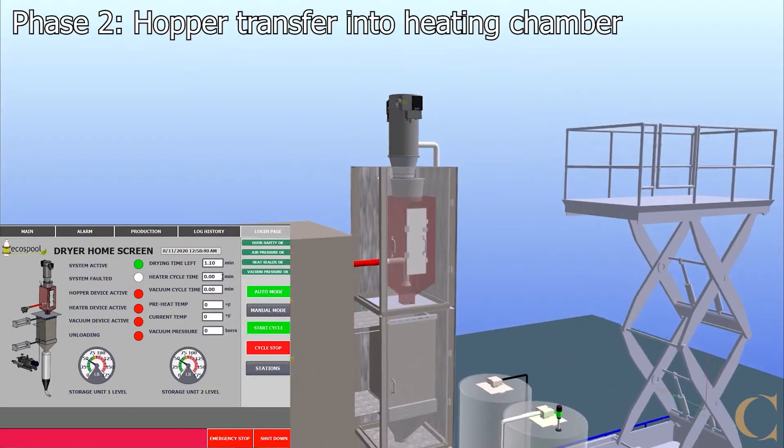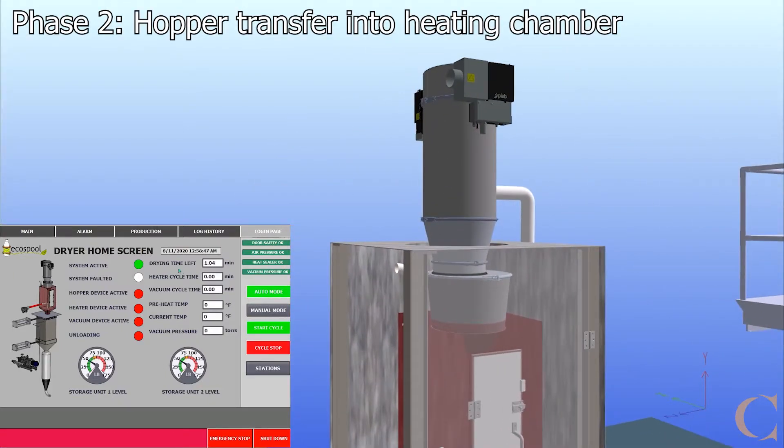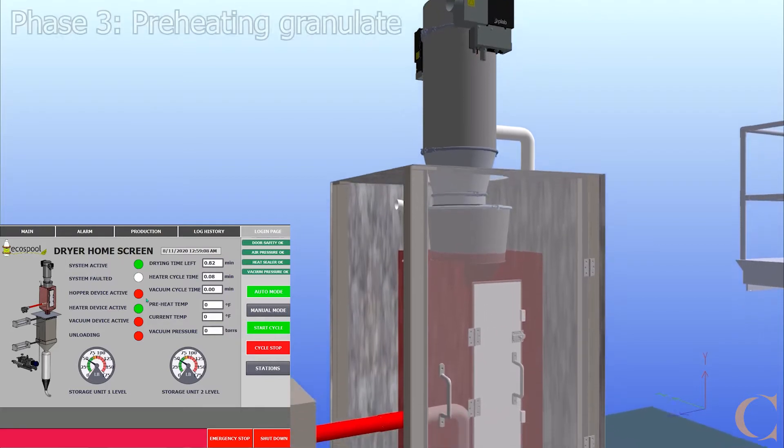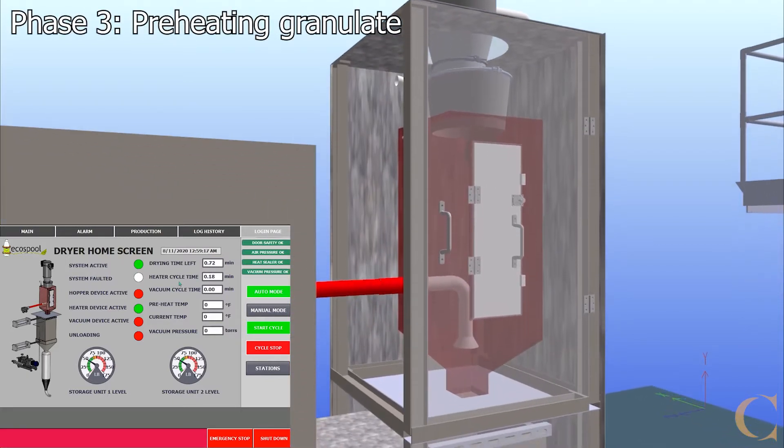In Phase 2, a hopper with an integrated vacuum transfer unit moves the particulates from the storage silo to the in-feed hopper and then into the heating chamber. During Phase 3, the particles are preheated to a temperature of 180 degrees Celsius.